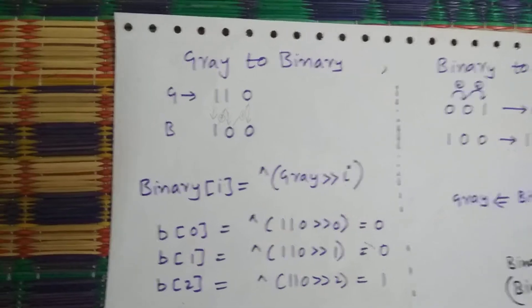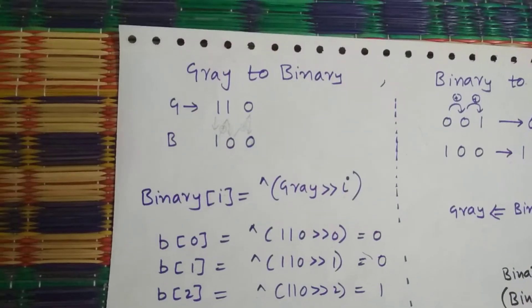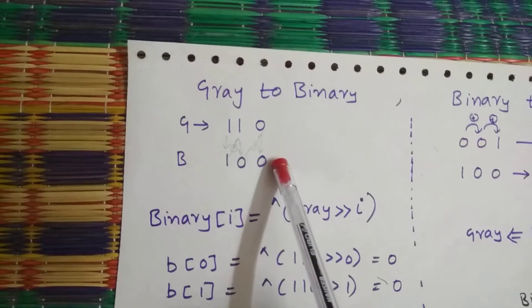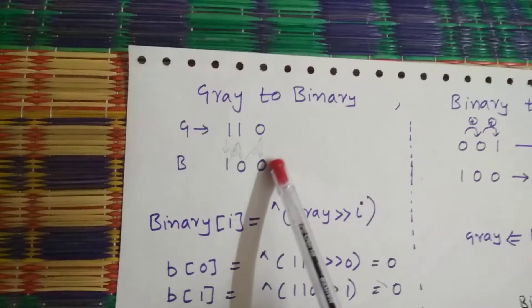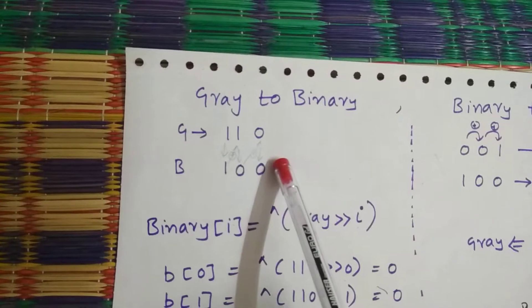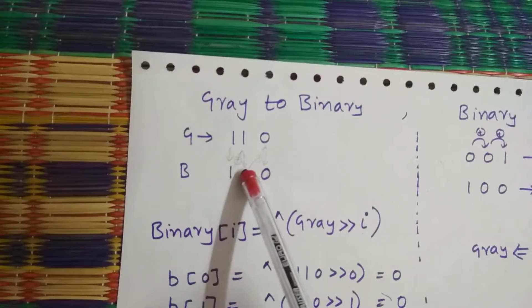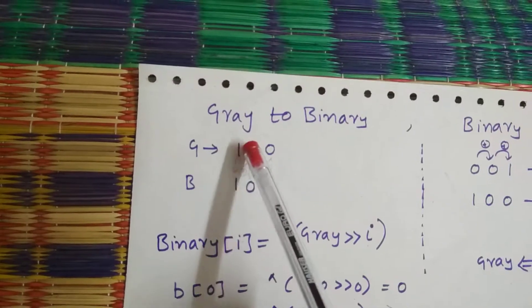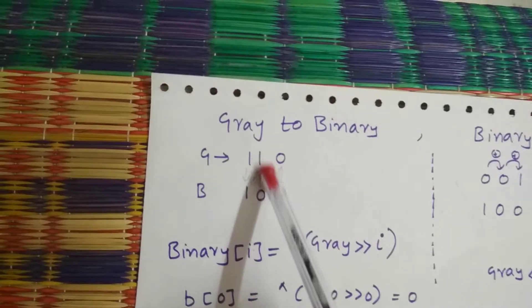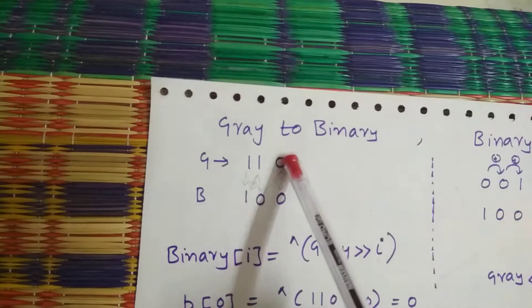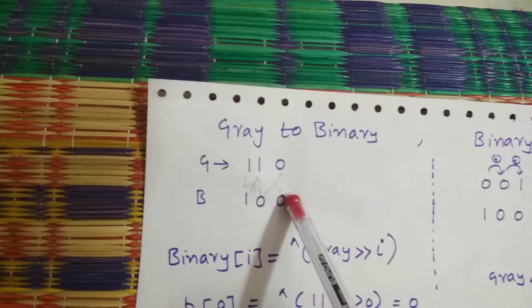Now coming to Gray to binary. We have a Gray code over here and this is a binary code. How can we convert Gray code to binary code? Similarly, we are going to use XOR gates. MSB bit is as it is. The MSB bit is going to be XORed with the Gray code second bit and produce the binary second bit. Binary second bit XORed with the first bit is going to produce binary LSB bit.